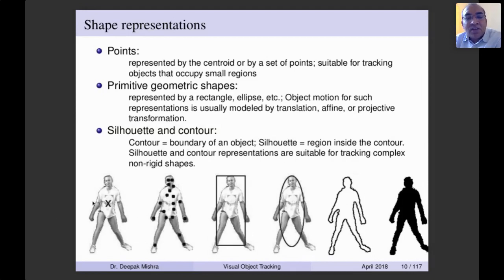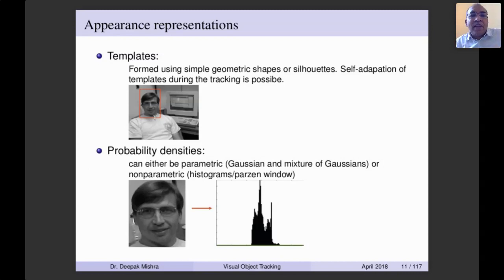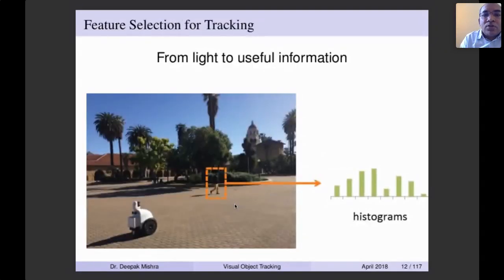For tracking, we can take points around an object, enclose the person in a bounding box of different shapes, or use contour and silhouette representations. For appearance representation: templates are formed using simple geometric shapes or silhouettes, and self-adaptation of templates during tracking is possible. We can also define appearance using probability densities — either parametric (Gaussian or mixture of densities) or non-parametric (using Parzen window). The template is a patch in a particular frame, or it could be a probability density matched over subsequent frames.